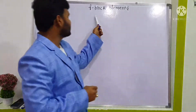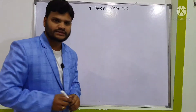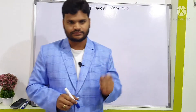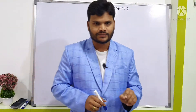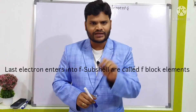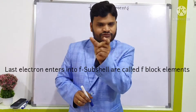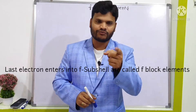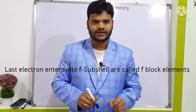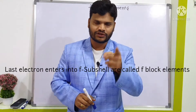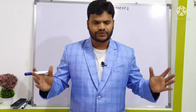So first, what are F block elements? The differentiating electron enters into the F subshell. The differentiating electron is nothing but the last electron. If the last electron enters into the F orbital, those are called F block elements.